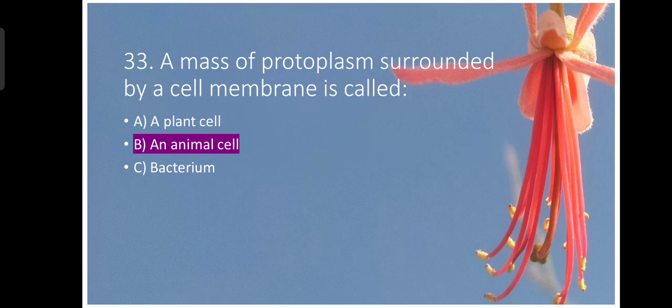A mass of protoplasm surrounded by a cell membrane is called an animal cell. Surrounded by cell membrane, not by cell wall. So in plant cell as well as in bacterium, it is surrounded by cell wall. So the animal cell is correct answer.